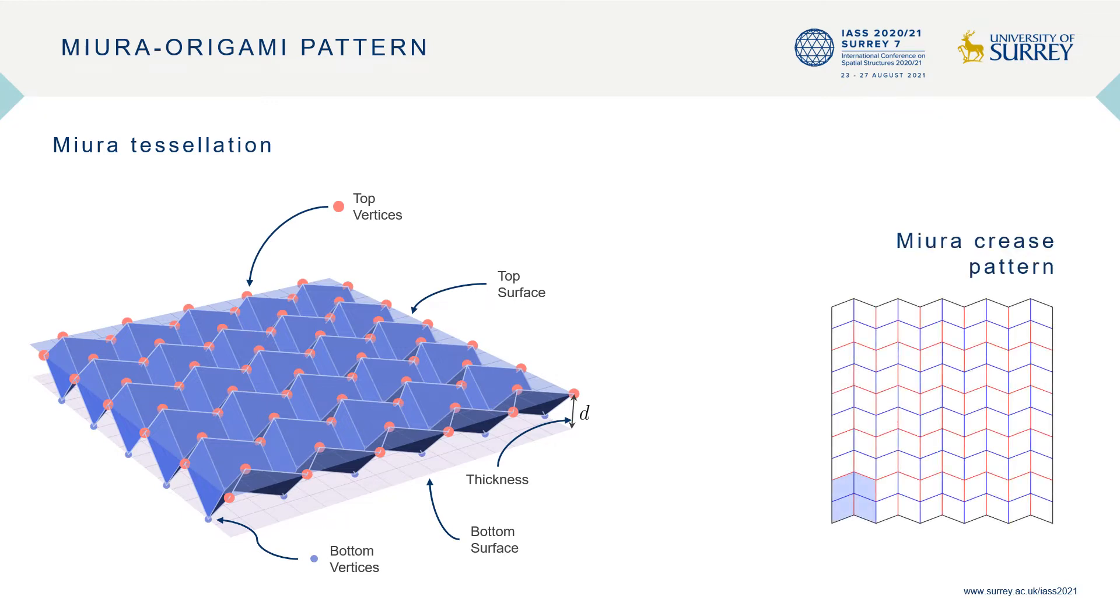The folded Miura structure is obtained by folding a crease pattern shown on the right. The folding is dictated by the creases which are specified either as mountain or as valley folds.